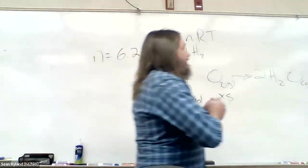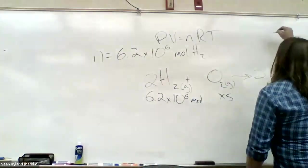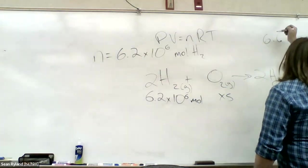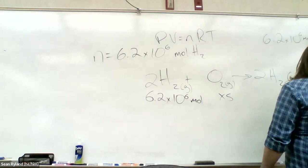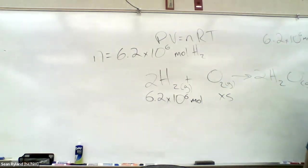Set it up as a conversion factor. 6.2 times 10 to the 6 moles hydrogen. And for every one mole of hydrogen, that's 285.8 kilojoules. It's a fairly exothermic reaction.